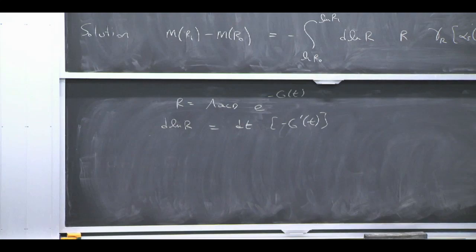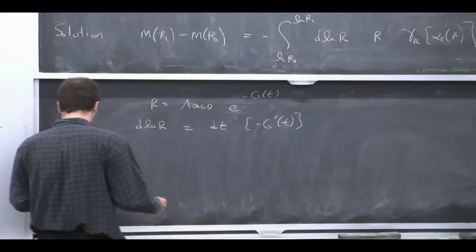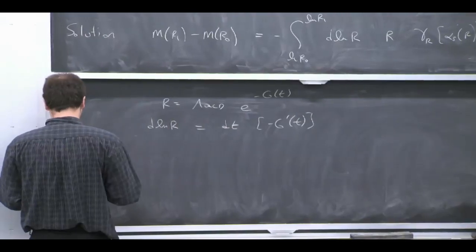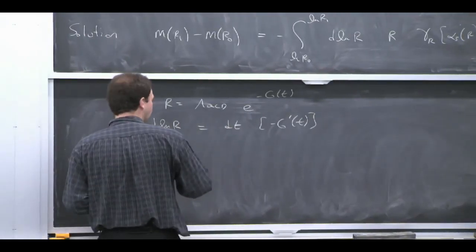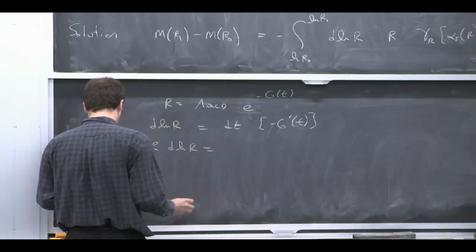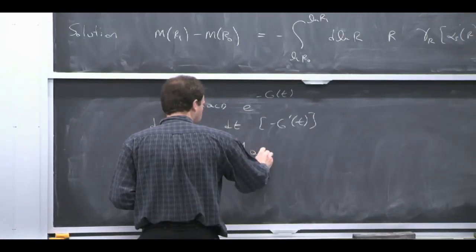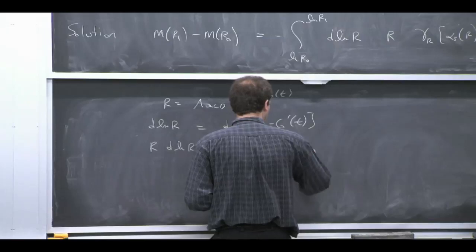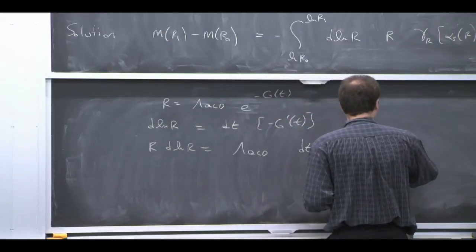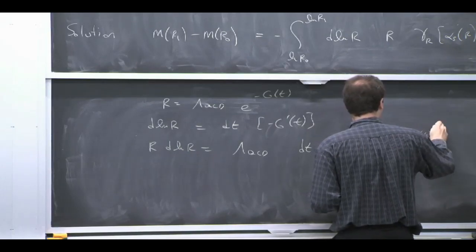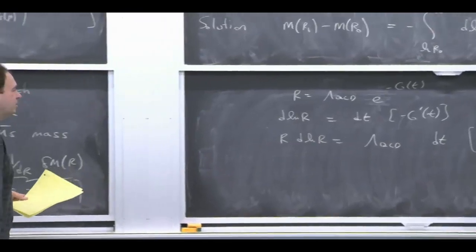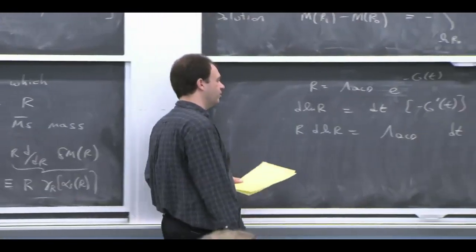So R d log R is just the product of these things. And I can write it actually kind of a compact way if I write it as lambda QCD, DT, D by DT of e to the minus G of T. So we got a G prime, and then we got an e to the minus G of T. Let's just write that as a total derivative of that.